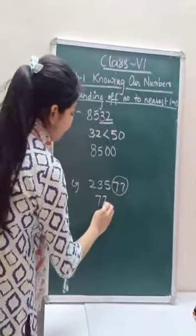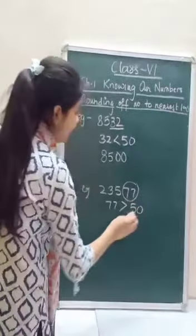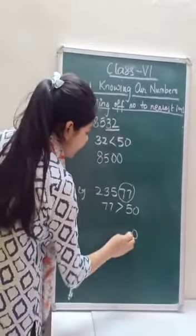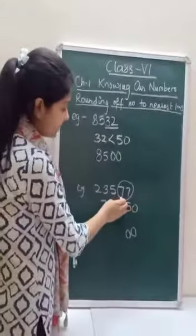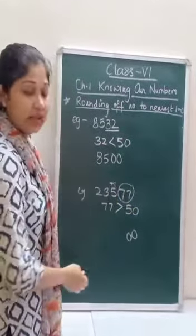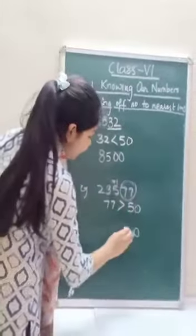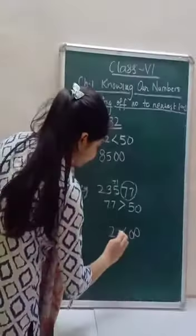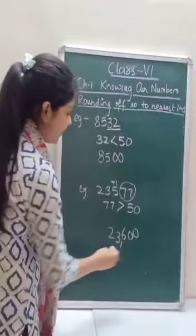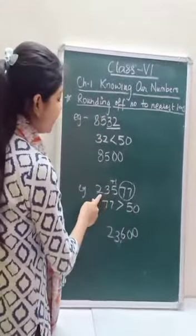Now if the last two digits form a number greater than 50, you have to put zeros in the place of ones and tens, and add one in the place of hundreds. So the number becomes 23,600, which is the round off of 23,577 to its nearest hundred.